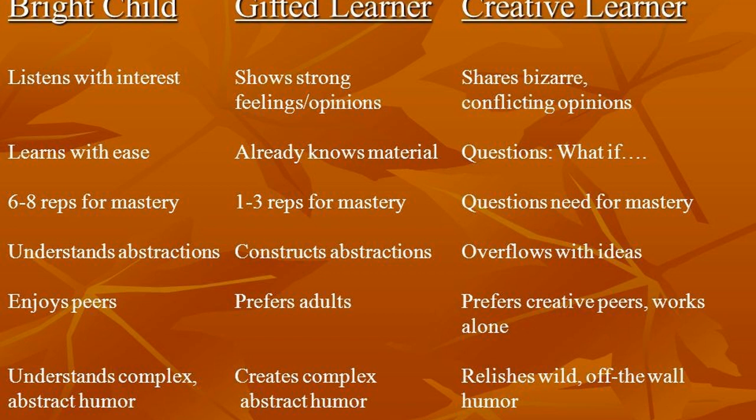The gifted learner likes to create complex, abstract humor — things a little different from the norm. Even though the bright child gets the joke, the gifted learner wants to take it further: 'Have you considered this?' or 'What if something had been different?' The creative learner, on the other hand, can be so off-the-wall with their humor that it doesn't seem appropriate to others. It makes sense within their creative thinking, but doesn't follow social norms or classroom rules. So the bright child gets the humor, the gifted learner takes it further, and the creative learner comes up with something completely different you hadn't even thought of.